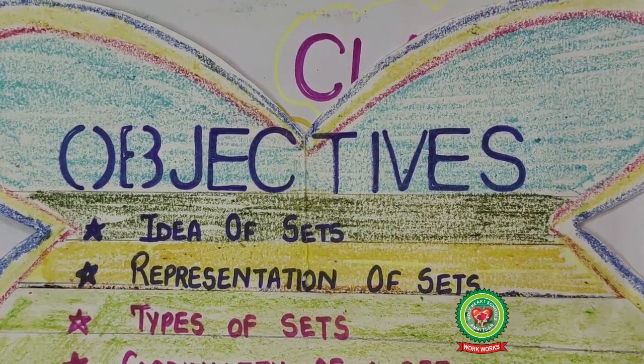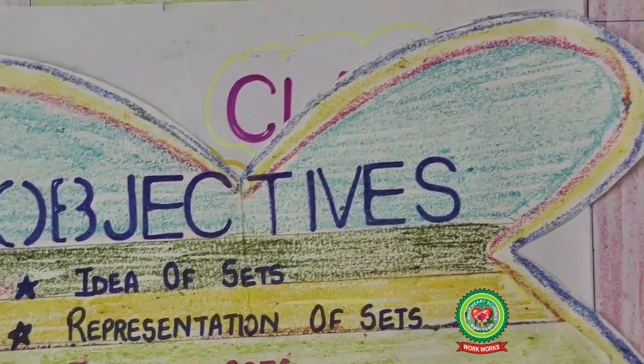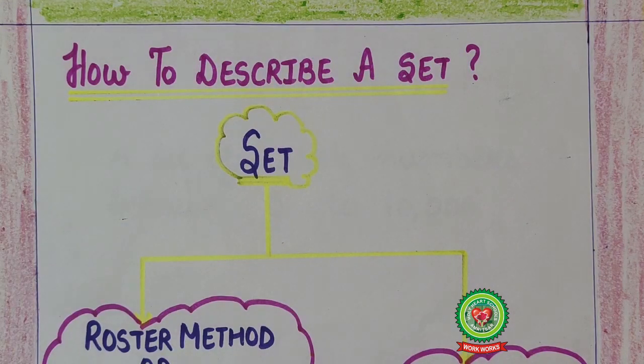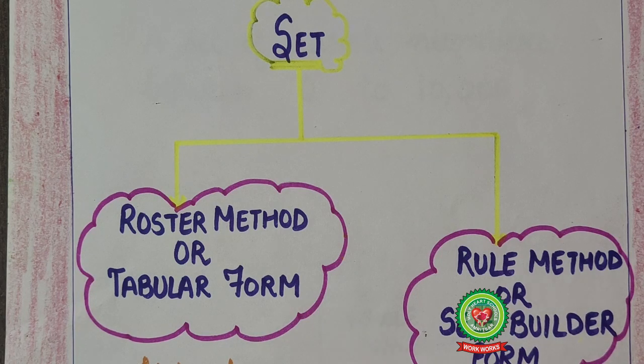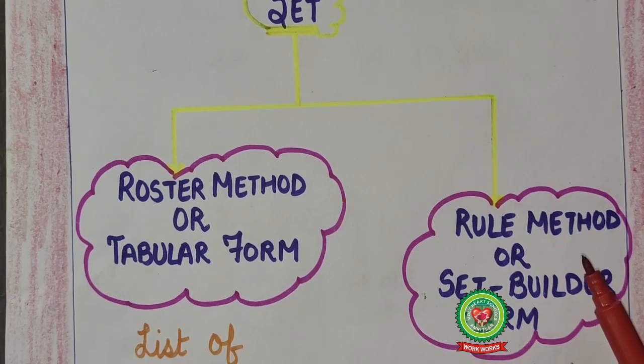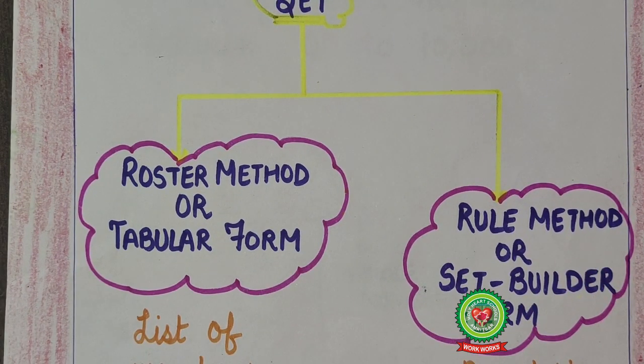Now we have already discussed that there are two ways to describe a set: roster method or tabular form, which we have already done. Today we will continue with rule method, which is also known as the set builder form.